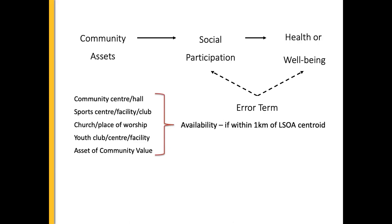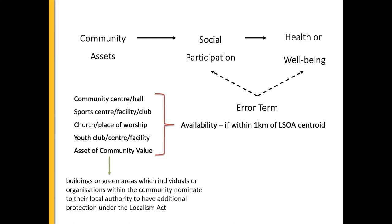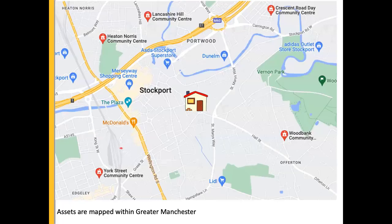Assets of community value are special ones that individuals nominate within their community with their local authority, and they have special protection so they can't be disposed of — individuals want to keep them in their community. We geocoded this data to get coordinates for all five asset types. Some were easy to get, some involved Googling which was quite time-consuming. That's why we focused our findings on Greater Manchester, which allowed a good urban area of the UK without the data collection being too burdensome.